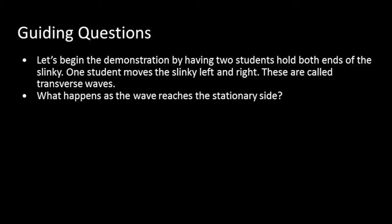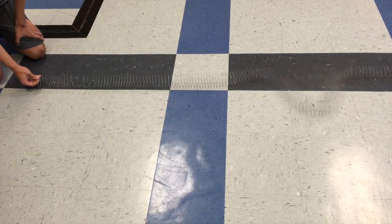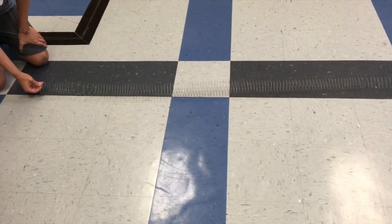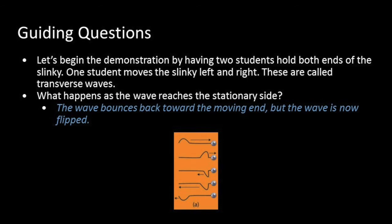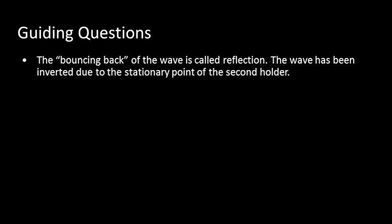So what happens as the wave reaches the stationary side? The wave bounces back toward the moving end, but the wave is now flipped. The bouncing back of the wave is called reflection. The wave has been inverted due to the stationary point of the second holder.